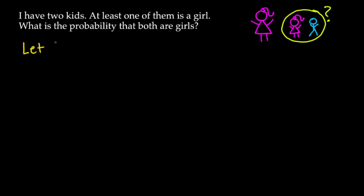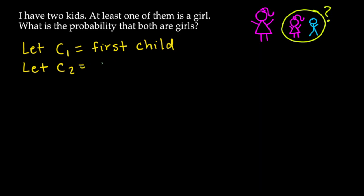Now we move on to the second problem, which is a variation of the first with a slight change in wording. The problem now reads: I have two kids, at least one of them is a girl — what is the probability that both kids are girls? You may think this is the exact same problem as before, but the slight change in wording makes all the difference.